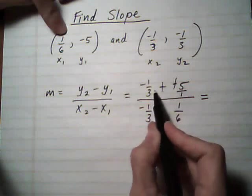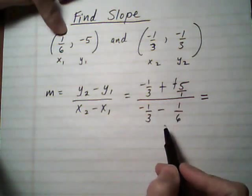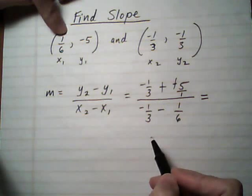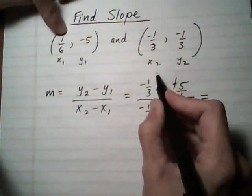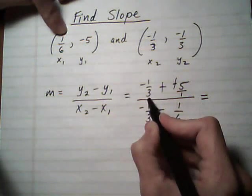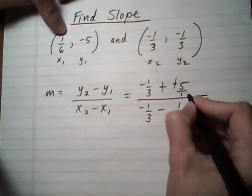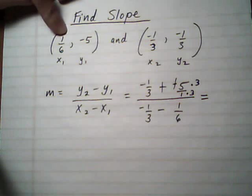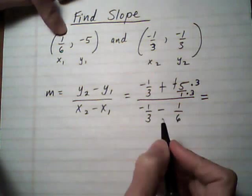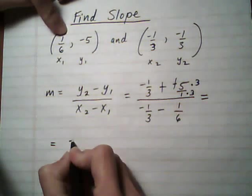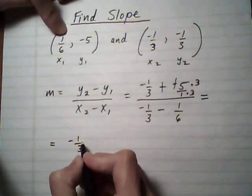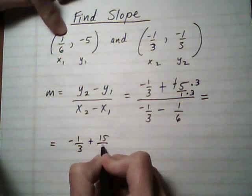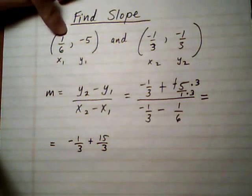Because we have addition or subtraction of fractions here, we need to do common denominators and treat the numerator and denominator separately. So let's take this top one here, the numerator. Let's get a common denominator of 3. So I'm going to multiply times 3 times 3 on the 5 over 1. And that's going to give me, for the numerator, minus one third plus 15 over 3. So I have common denominators on top.